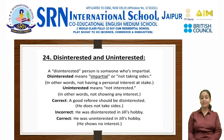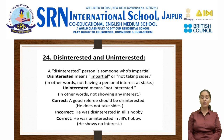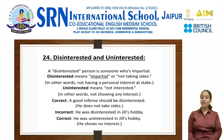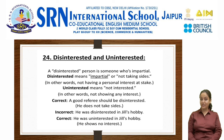The next error is disinterested versus uninterested. A disinterested person is someone who is impartial — disinterested means impartial or not taking sides, not having a personal interest at stake. Uninterested means not interested — not showing any interest. The correct sentence would be: a good referee should be disinterested, meaning the referee does not take sides. He was uninterested in Jill's hobby, meaning he is showing no interest in Jill's hobby.